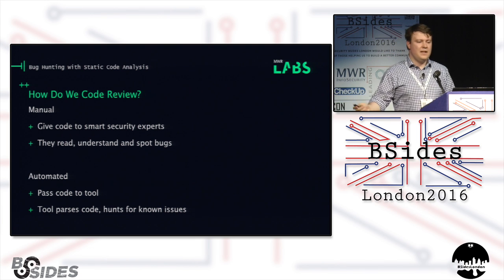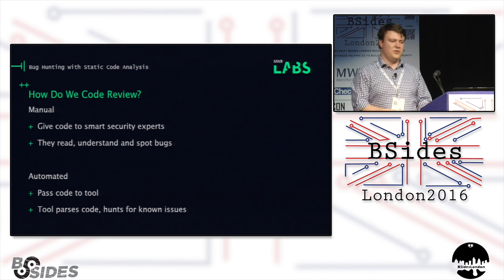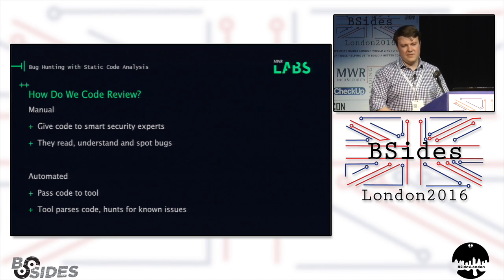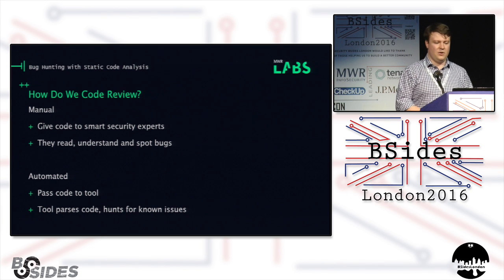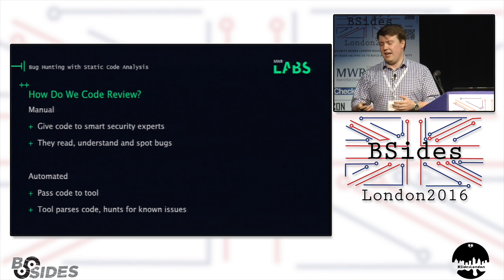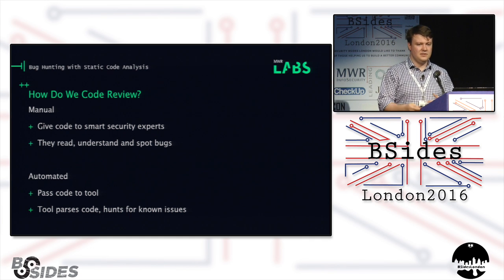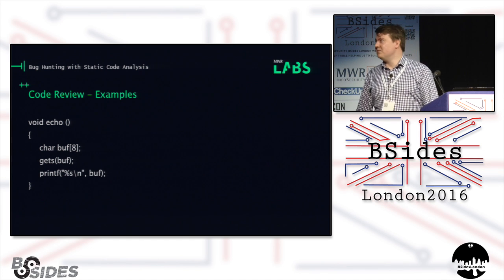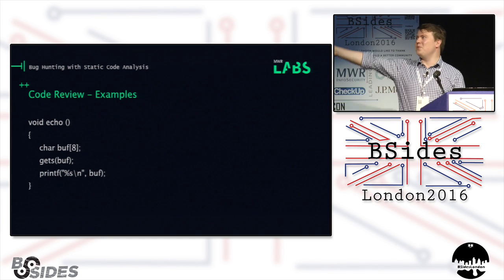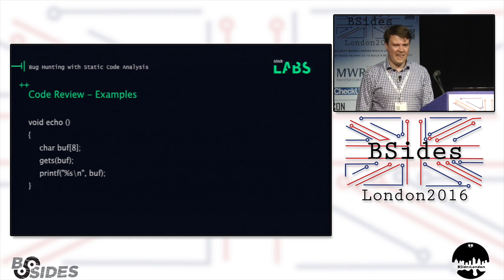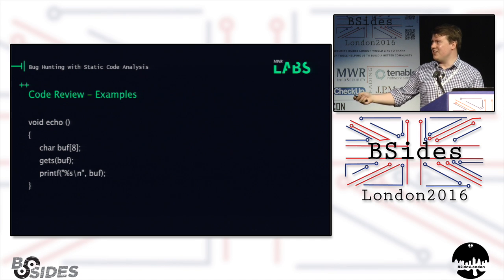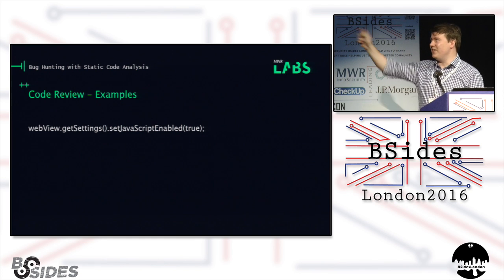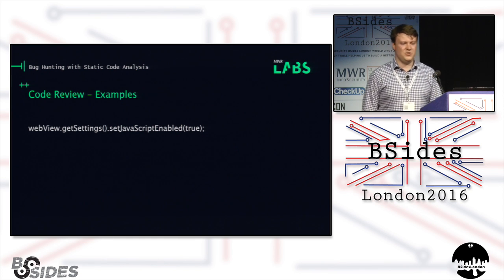So how do we do code review? You can either do it manually or build a tool to do it. In the manual sense, you give it to smart security people who understand how to look for bugs in source code, they read through it and try to find some bugs. The other approach is to build a tool, pass your code into it, and let the tool reason with the code to spot issues. From a manual perspective, I'm sure a few of you have seen things like buffer overflows crop up in code. That's a nice easy one — immediately obvious when you read it. Likewise, if anyone's done Android security, they'll tell you that setting JavaScript enabled on WebViews generally doesn't end well.